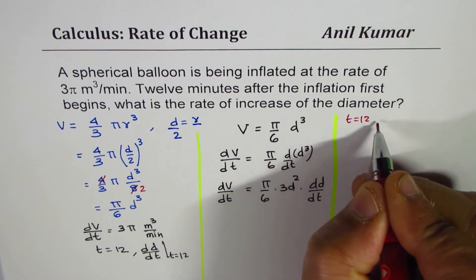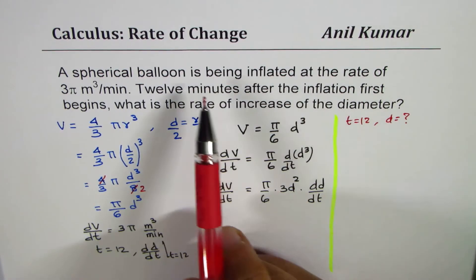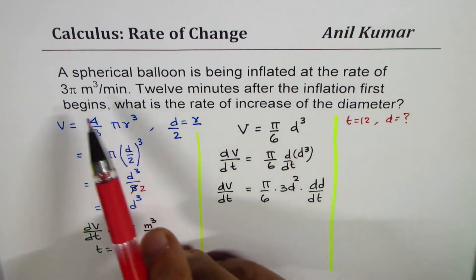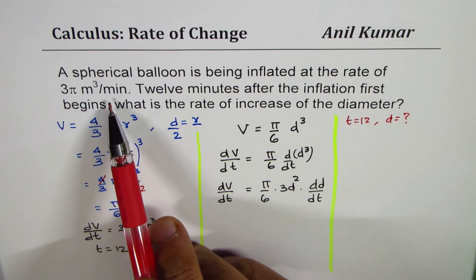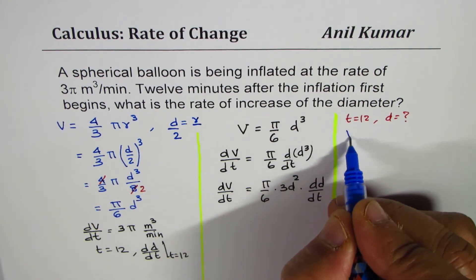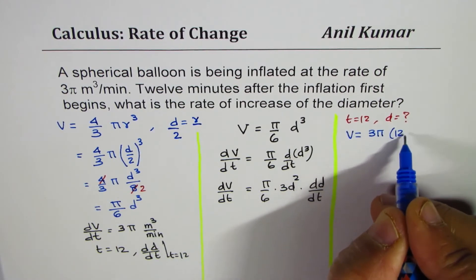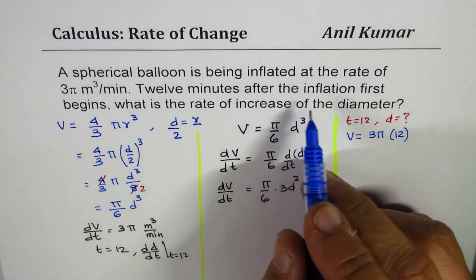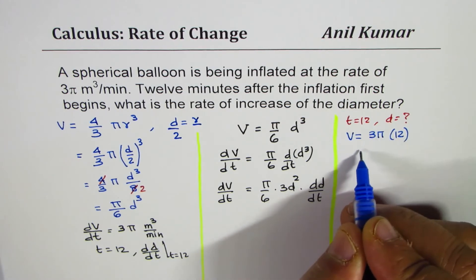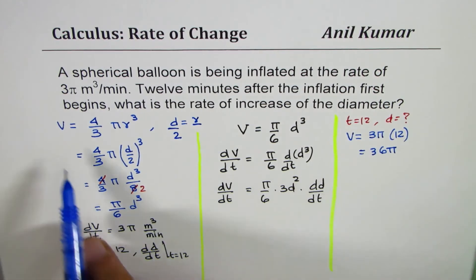When t equals 12, what is the diameter? How are you going to find this? The spherical balloon is being inflated at the rate of 3π m³/min, so that means the volume will be 3π times 12 after 12 minutes. The volume will equal 36π.